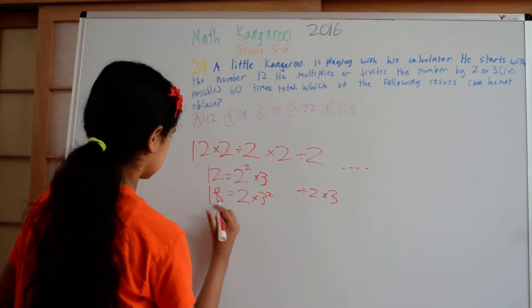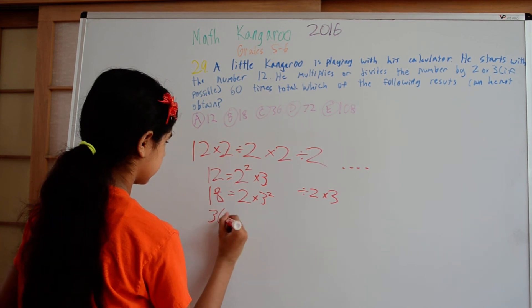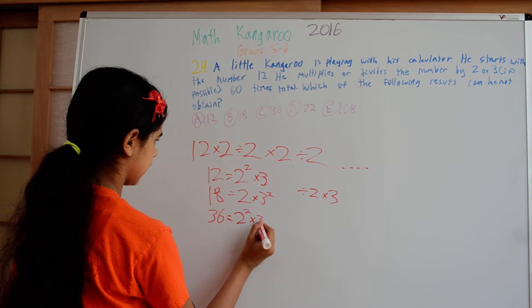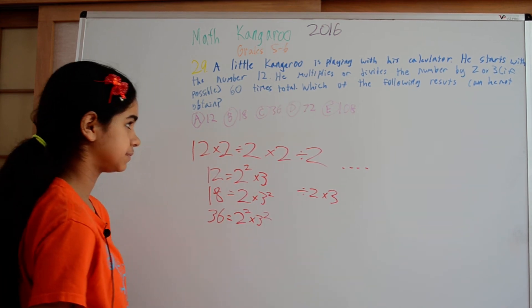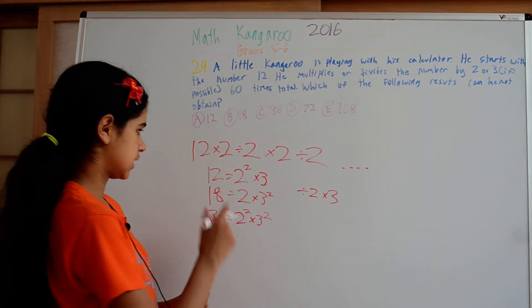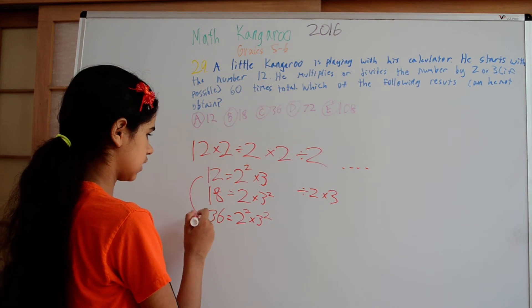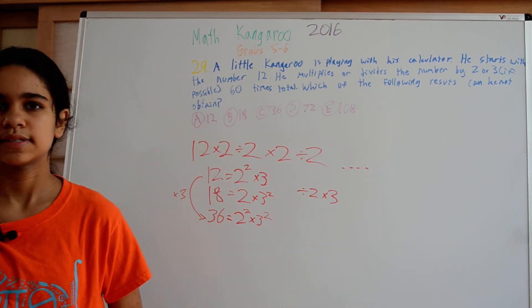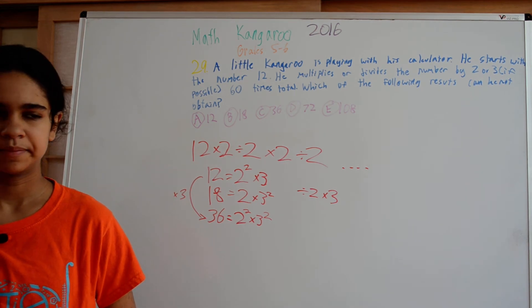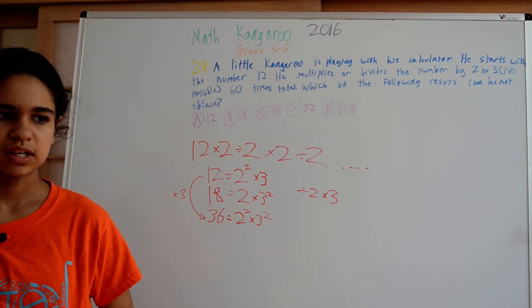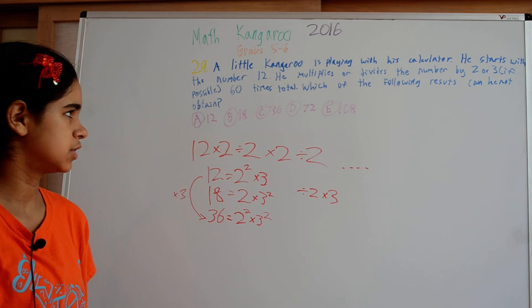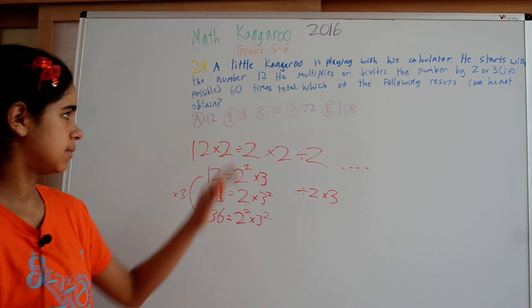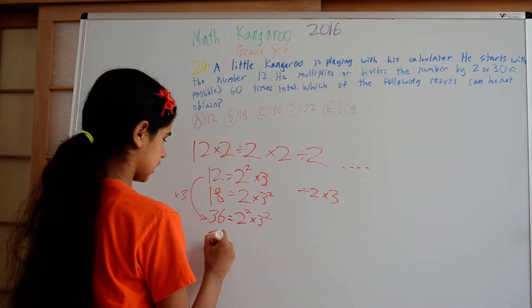Let's look at 36. 36 is 2 squared times 3 squared. So to get from 12 to 36 here, all we have to do is multiply by 3. That's an odd number of steps we have to take. So it looks like we might not be able to do 36. We probably can't do that. But we can still check and make sure we can do the others just to be absolutely sure.